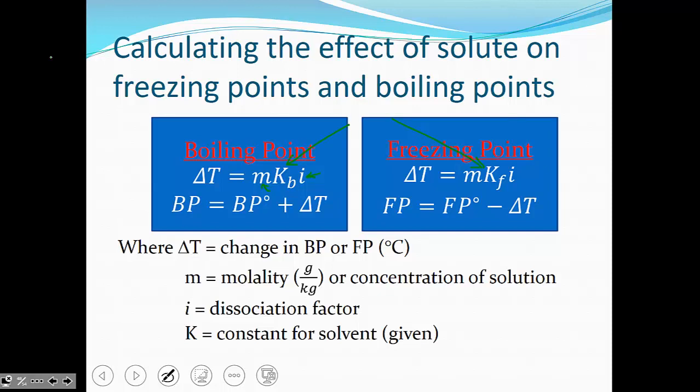We use these changes in temperatures and we add them to boiling point and take them away from freezing point. So it's the original or normal freezing point minus our delta T, or it's the boiling point plus our delta T. Boiling point rises and freezing point depresses.